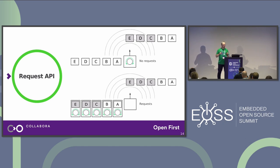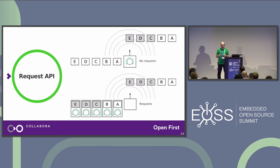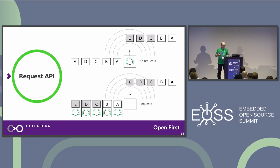In video codecs, requests are useful for associating an output buffer with a set of controls to be applied when processing that particular frame. In stateless codecs there are many parameters to associate with each frame.